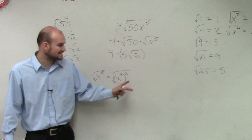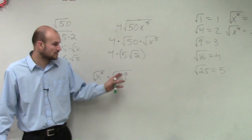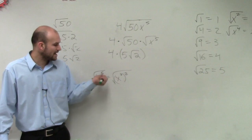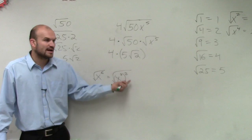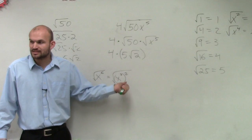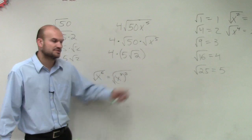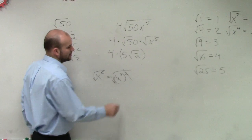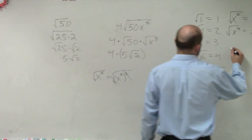Remember, what you want to do is: as long as the exponent is divisible by 2 — as long as you can write your exponent as a product of 2 — the square root and the squaring will undo each other, leaving you with x cubed.